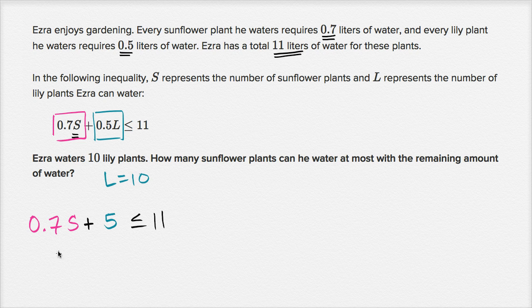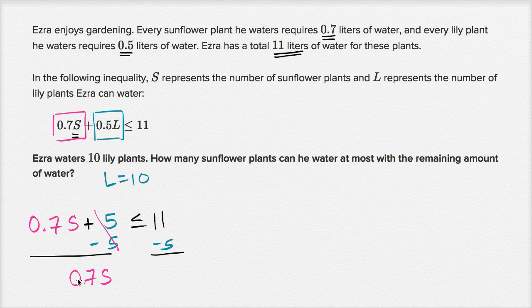So we can try to isolate the S on the left-hand side. So let's do that, the number of sunflowers. We can first subtract 5 from both sides, and we are going to be left with, on the left-hand side, we're going to just have 0.7 times S. So this expression, this is the total amount of water he's going to spend on the sunflower plants, has to be less than or equal to 11 minus 5 is equal to 6.